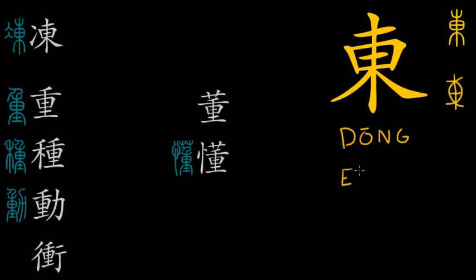The etymology of this character is pretty interesting because it underwent quite a few changes. If we look at the original oracle bone script character, the character is said to depict a sort of basket or bag which people in ancient China used to carry stuff around — basically a type of cloth that you put things into, wrapped with small ropes.